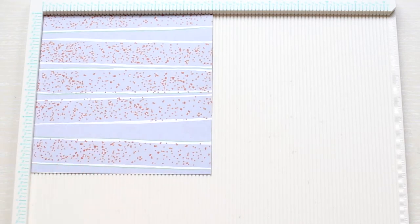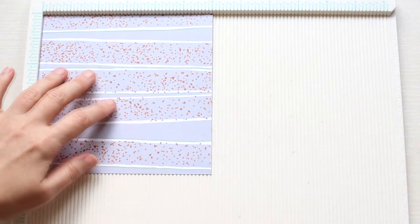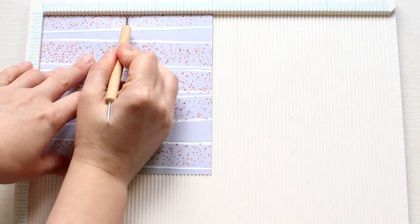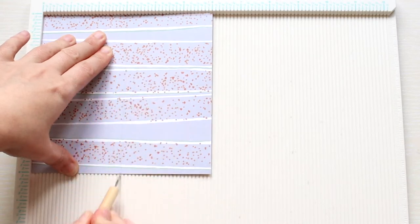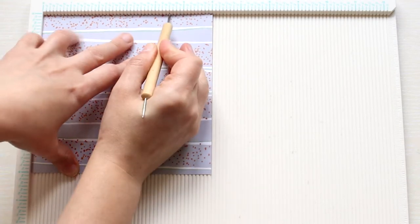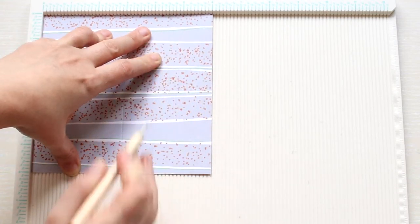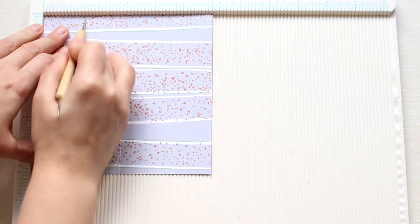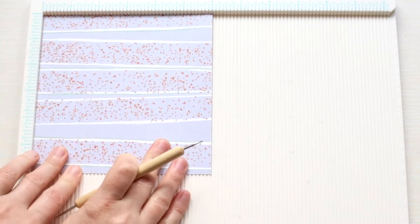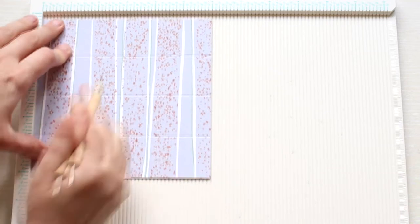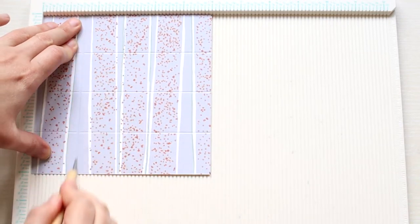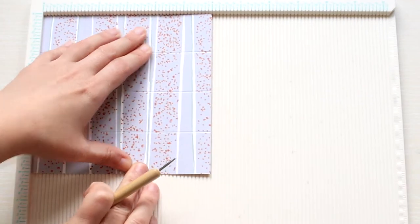Take your paper square and score at three inches. This is the middle of your square. Four and a half inches and one and a half inches. Rotate and score only the sides at one and a half inches and four and a half inches.